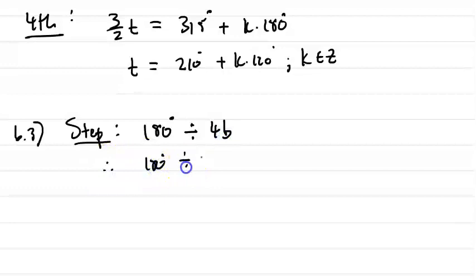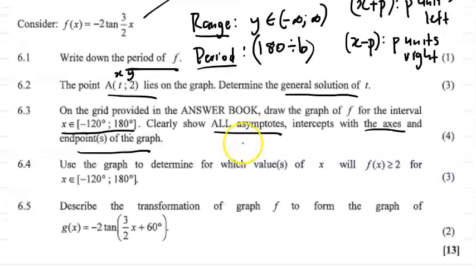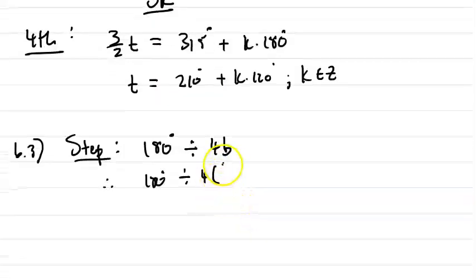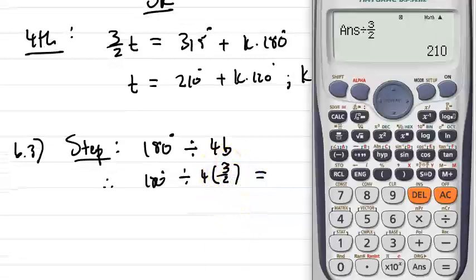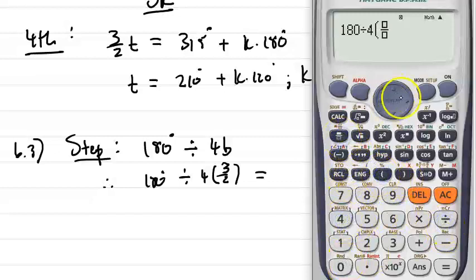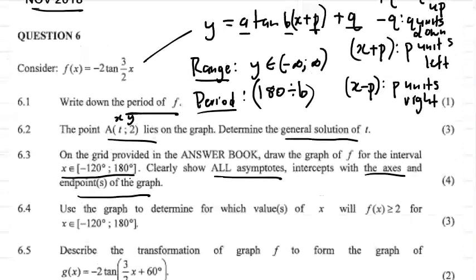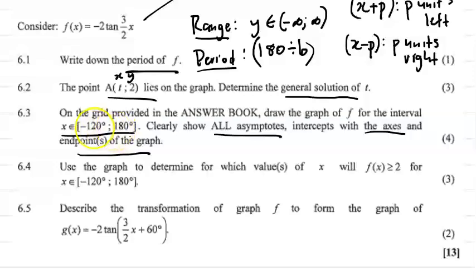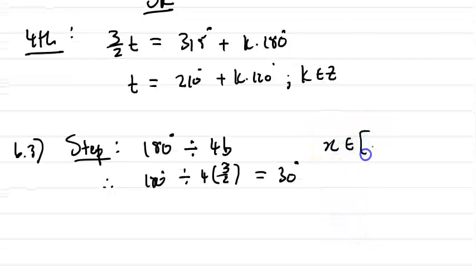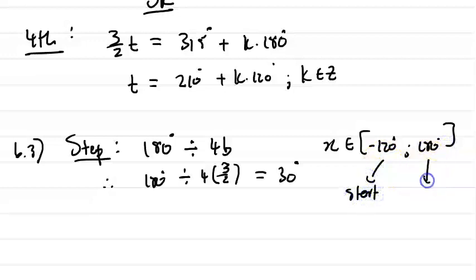So: 180 degrees divided by 4 times 3/2. Now 4 times 3/2 equals 6, so 180 divided by 6 equals 30 degrees. My step is going to be 30 degrees. The domain is x from minus 120 to 180. So that's my start and end, and I have my step. All I need to do now is input this into my calculator.